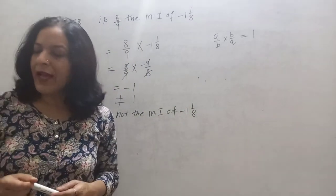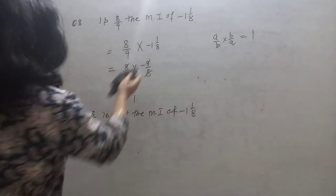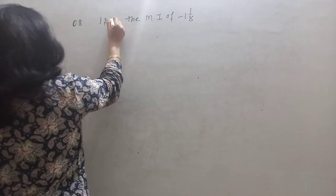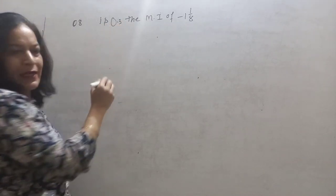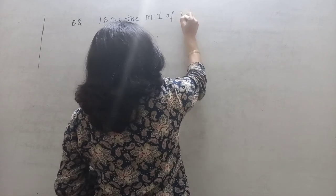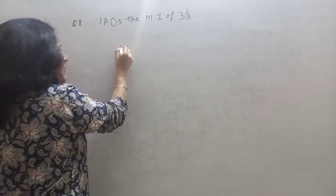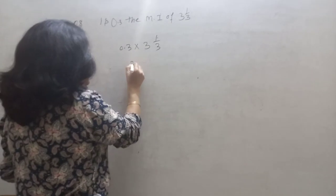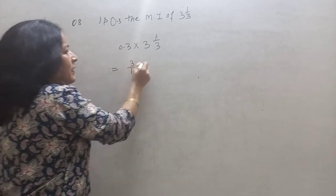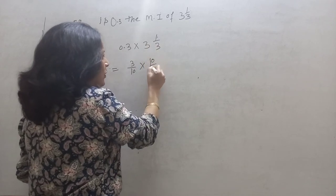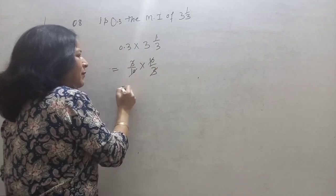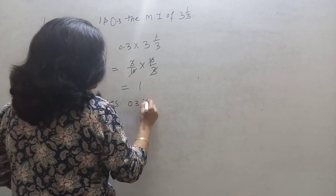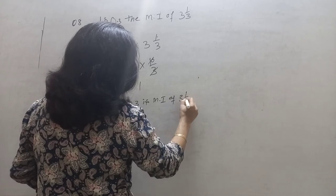Question number 9 is similar: is 0.3 the multiplicative inverse of 3 and 1 by 3? Let's check by multiplying both numbers. 0.3 can be written as 3 upon 10. So 3 upon 10 into 3, then into 10 upon 3 — the 3 cancels with 3 and 10 with 10, giving 1. Yes, 0.3 is the multiplicative inverse of 3 and 1 by 3.